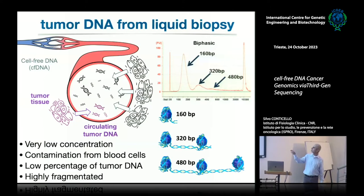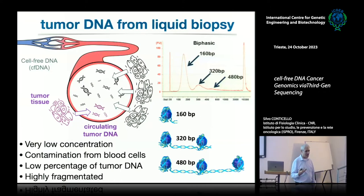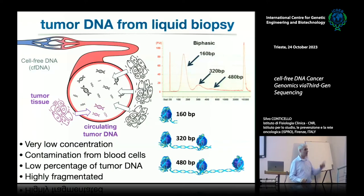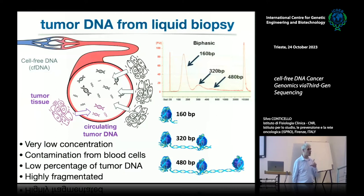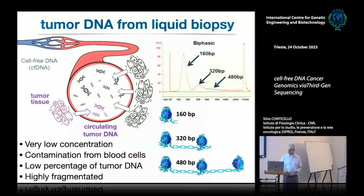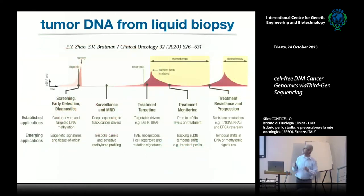The other problems are that this DNA comes from dying cells, so it is very highly fragmented — basically we only get nucleosomes: one, two, or three nucleosomes, so 160, 320 base pairs. And being a product of dying cells, it's cleared very fast from the blood, so the concentration is very low. From a 10 ml vial of blood we usually get between 50 and 200 nanograms of really poor-quality DNA.